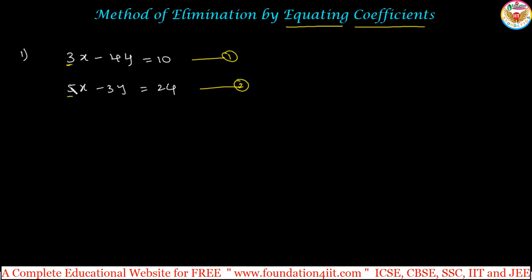If you observe this 3 and 5, their LCM is 15. So to make this 3 become 15, you should multiply equation 1 with 5. So the entire equation we can multiply by 5, each and every term.